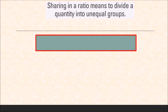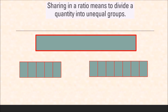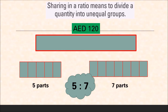Sharing in a ratio means to divide a quantity into unequal parts. Suppose we have this quantity — we can cut it into small groups and then share these groups unequally, such that one will get five parts and the other gets seven parts. So we say that this quantity is divided unequally into the ratio five is to seven.